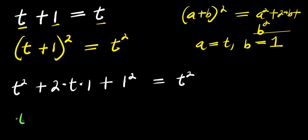From here you are going to have t squared plus 2 times t times 1, this is 2t plus 1 power 2, that is 1, and this equals t squared.